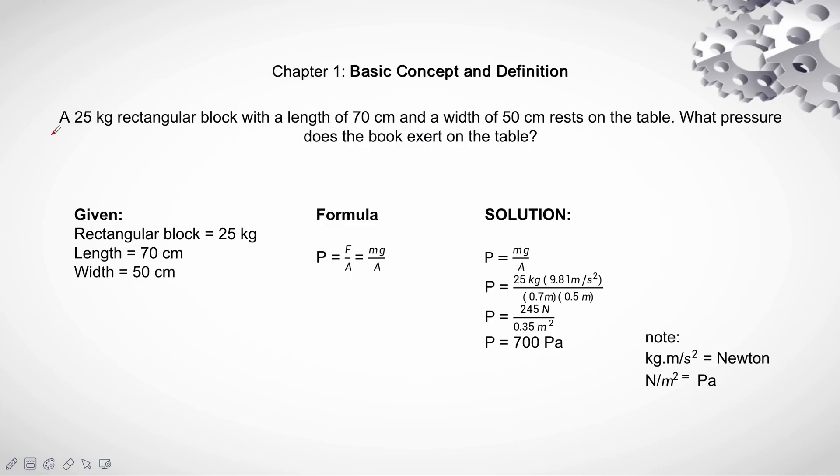Chapter 1, Basic Concept and Definition. A 25 kg rectangular block with a length of 70 cm and a width of 50 cm rests on the table. What pressure does the block exert on the table?